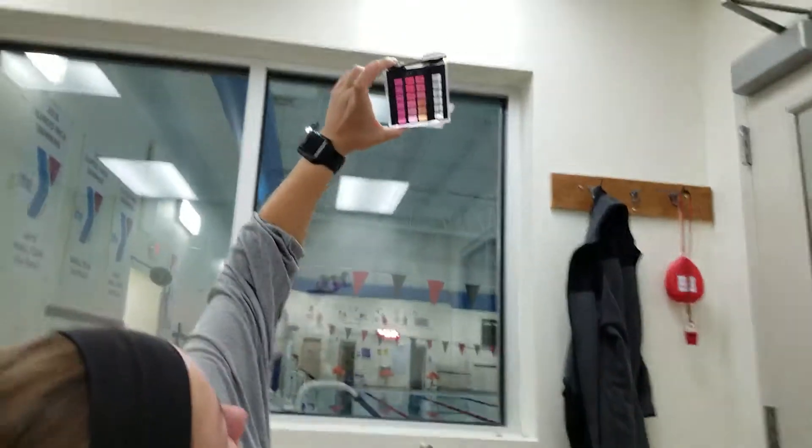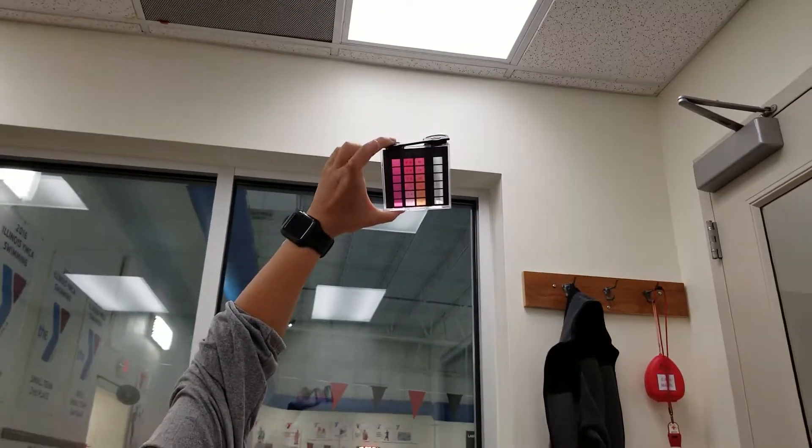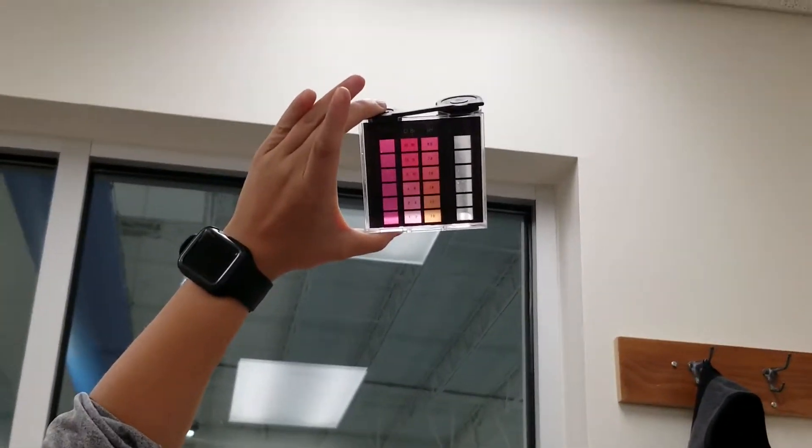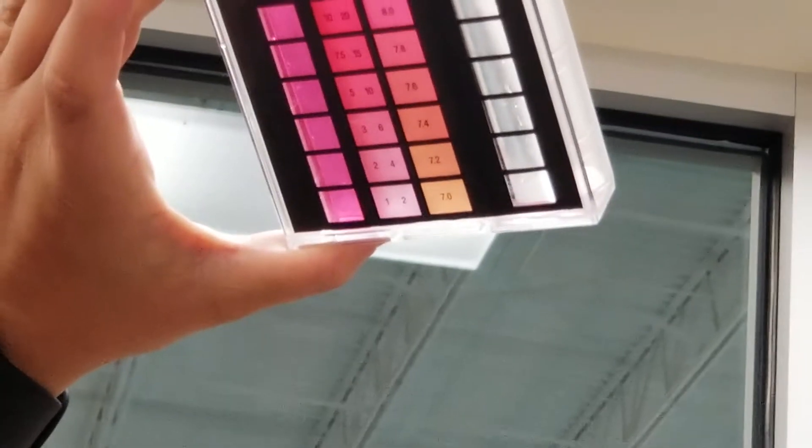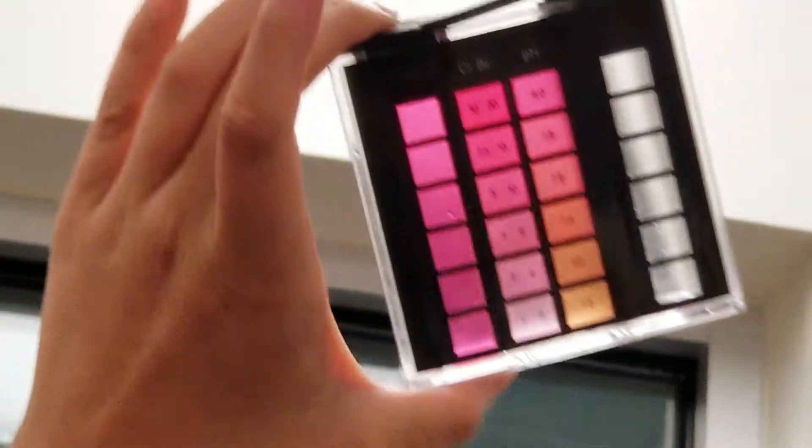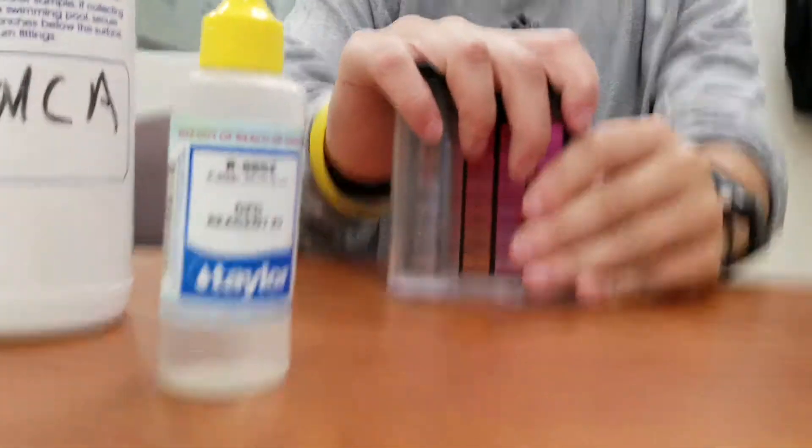Now that we have the test in there, we'll take a reading of that sample. What's that look like? A five, probably. Okay, it looks like a five on the FCL. We'll bring it back down and write that number down. That is our free chlorine.